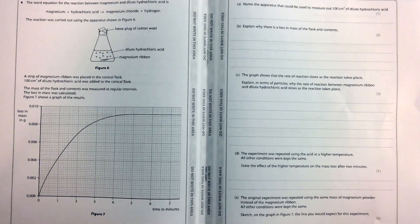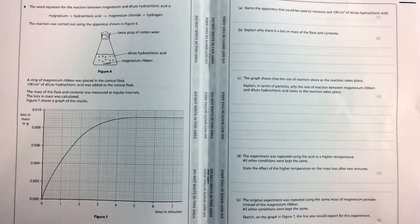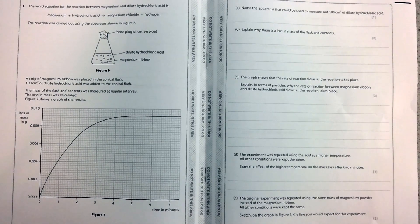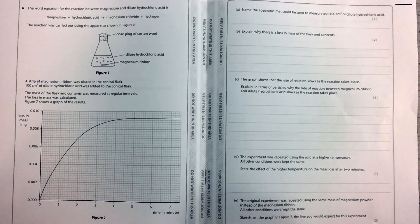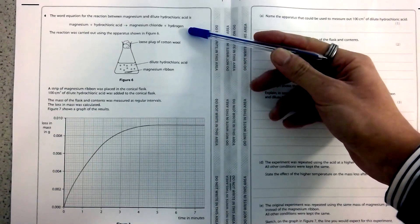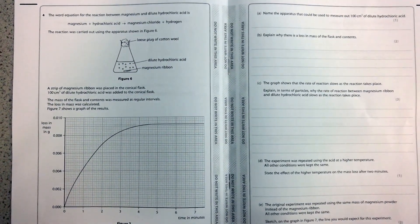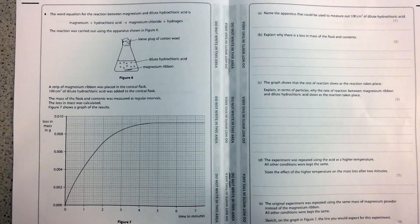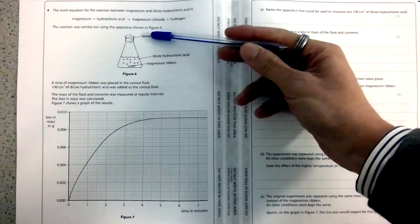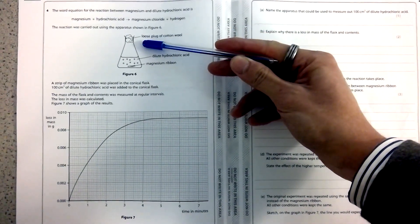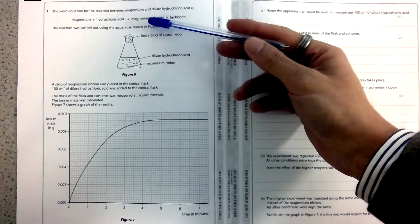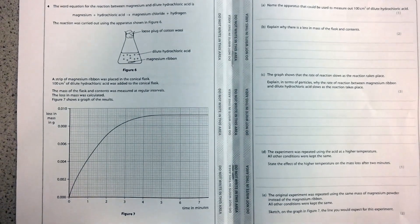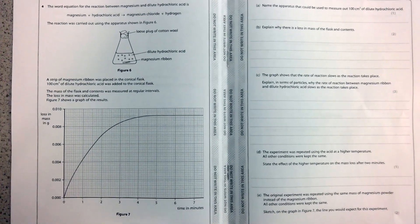For question B, this one asks you to explain why there's a loss in mass of the flask and the contents. In this reaction, hydrogen gas is produced, as you can already tell from the word equation that they've given you there. If the mass has gone down, it's because some of the gas must have escaped. You can see also in the diagram, they give you a clue by saying loose plug of cotton wool, as you may be aware that cotton wool allows gases to pass through it. So they're the two maps that you need to mention for that.